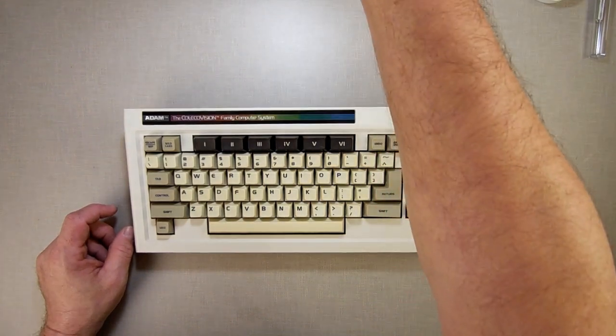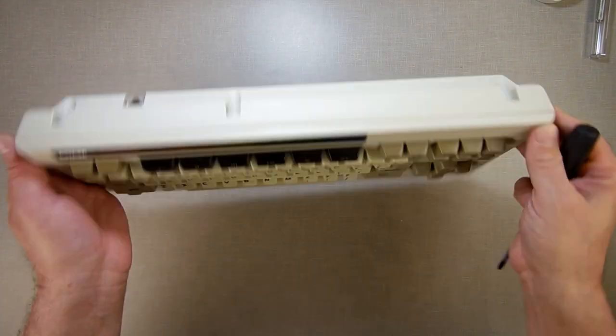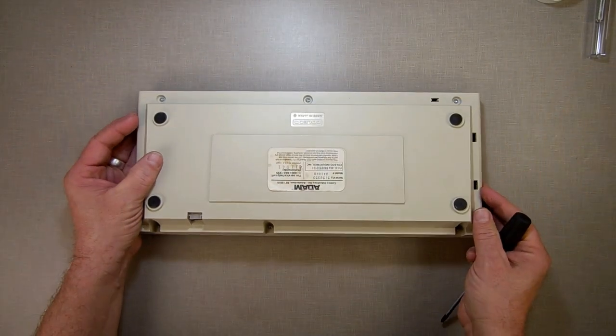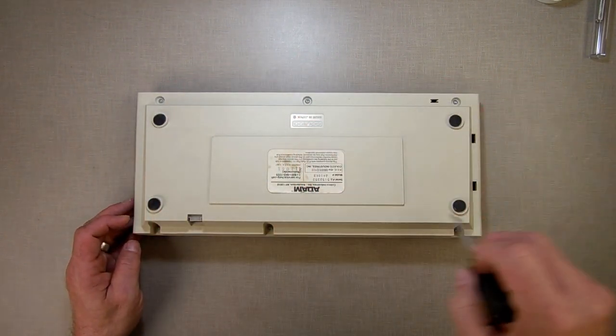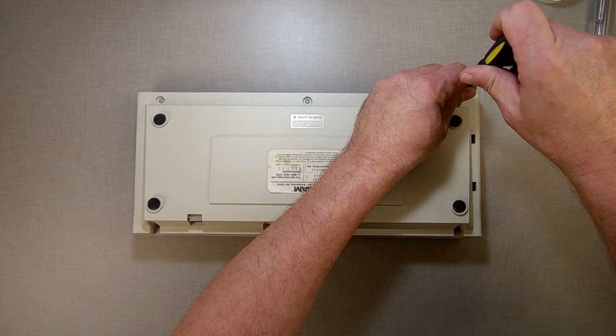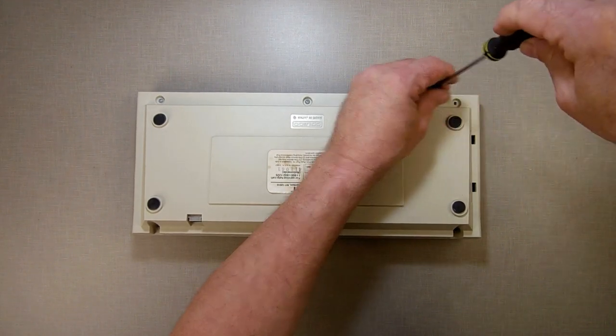All right, so now we're going to disassemble the keyboard which is very simple actually. There are six screws holding it together. And unlike others, we don't have to remove the rubber feet to get to them. Just take them out.